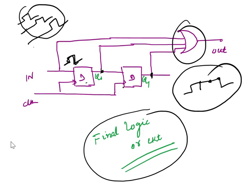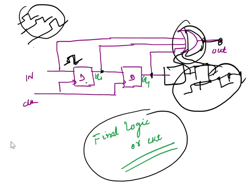So if they ask you to extend the signal for three clock periods, then what you have to do is add another flip-flop. If they ask you to extend for yet another clock period, then you add another flip-flop, and you OR all the outputs together with an OR gate. This is the final logic circuit. I hope you all understood. If you have any query, you can ask in the comment section. Thank you so much for watching.